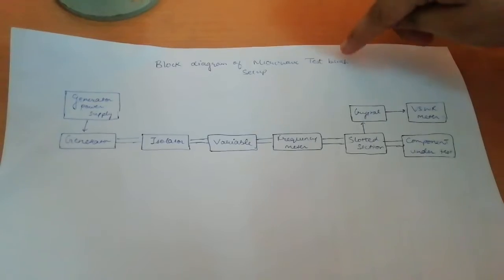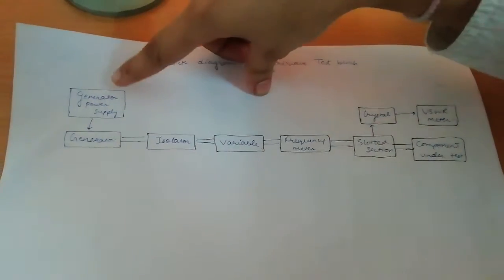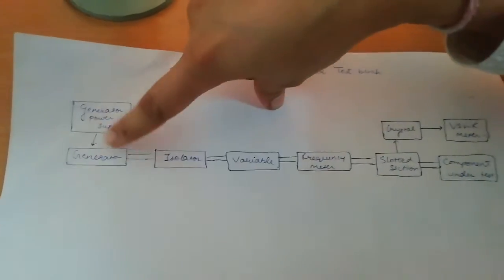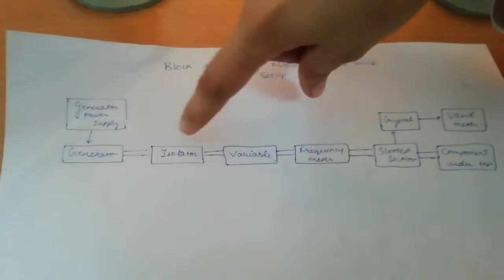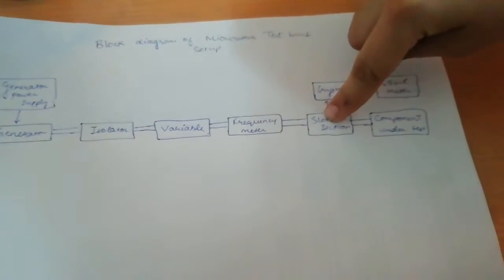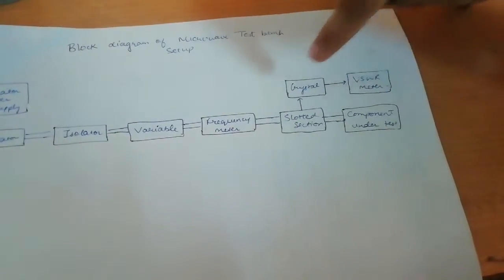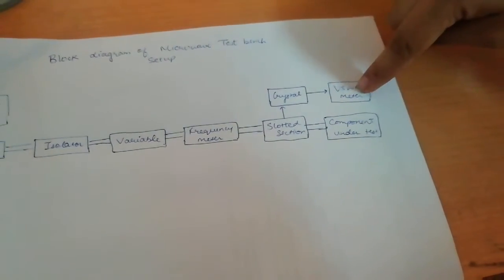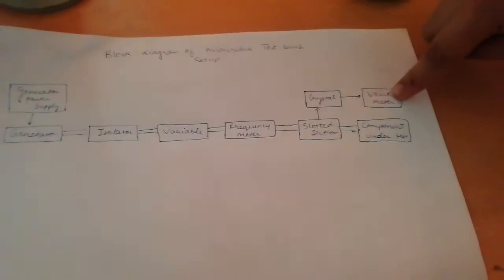This is a block diagram of the microwave test bench setup. First, generator power supply, then the generator, isolator, variable attenuator, frequency meter, slotted section, crystal detector, component under test, then VSWR meter which is voltage standing wave ratio.